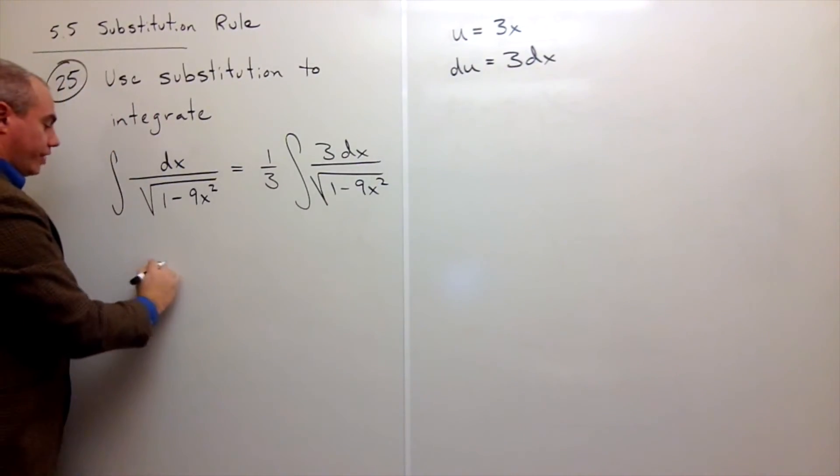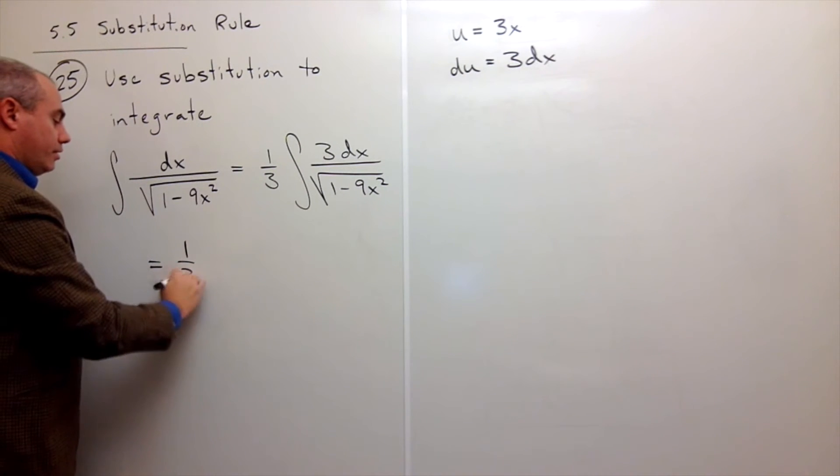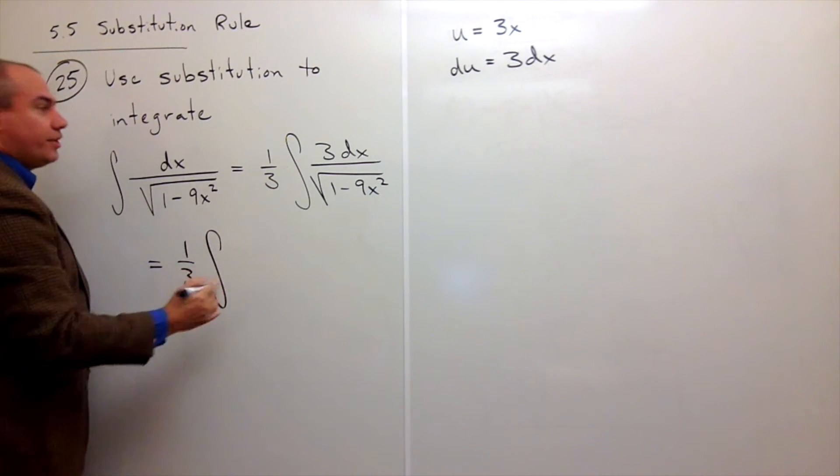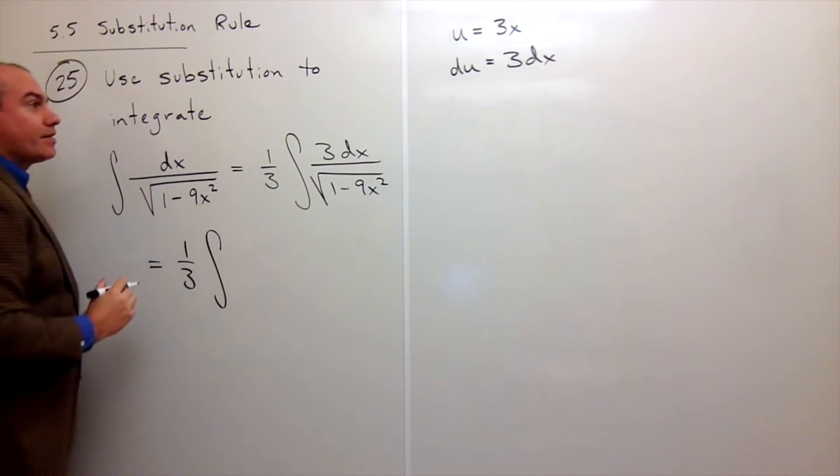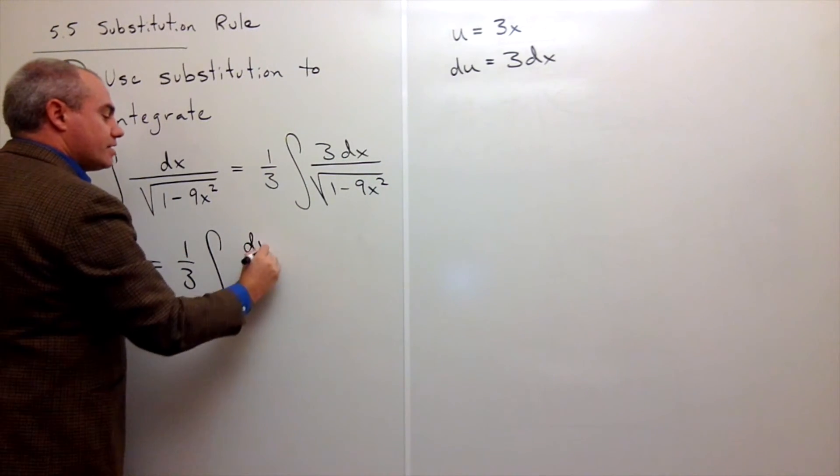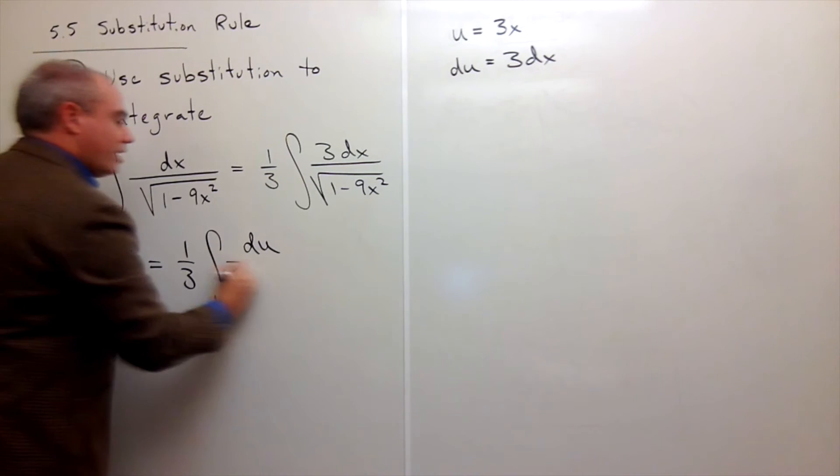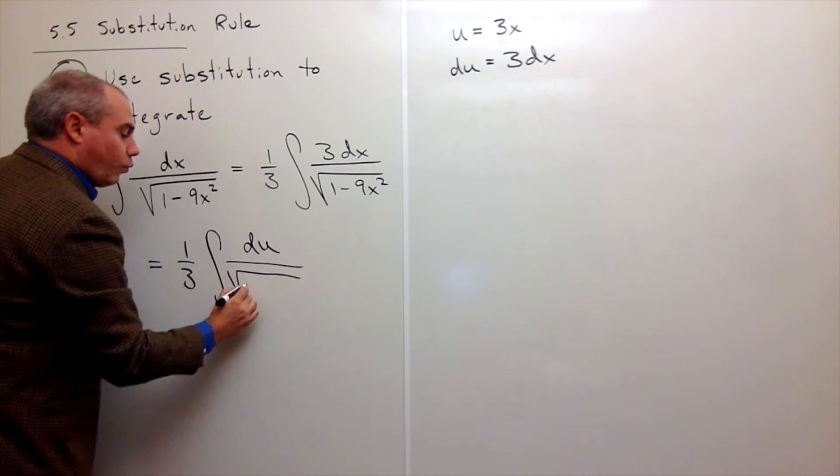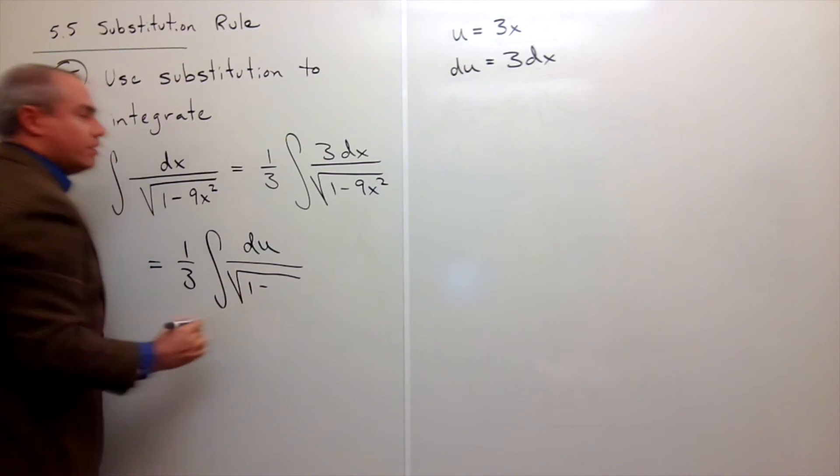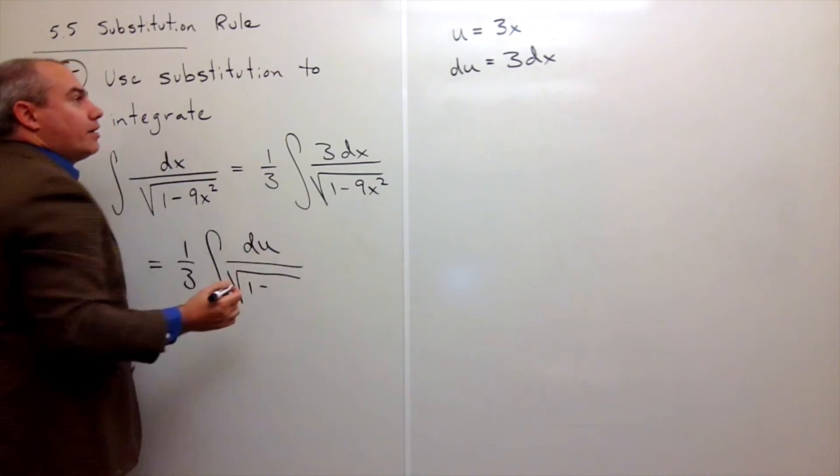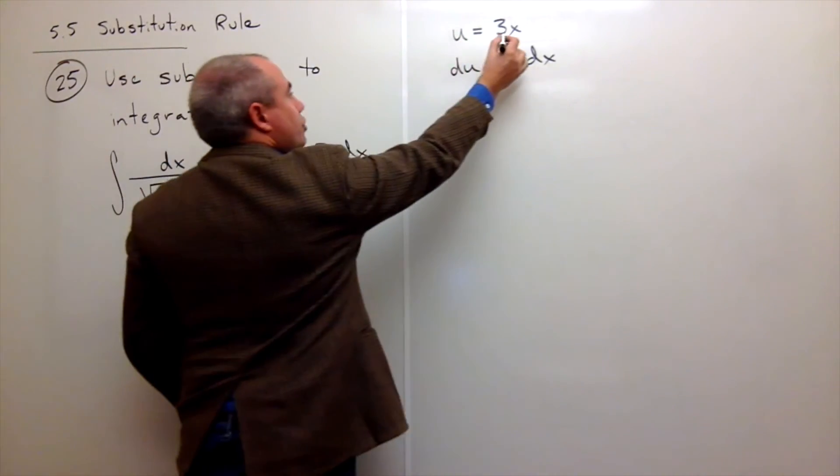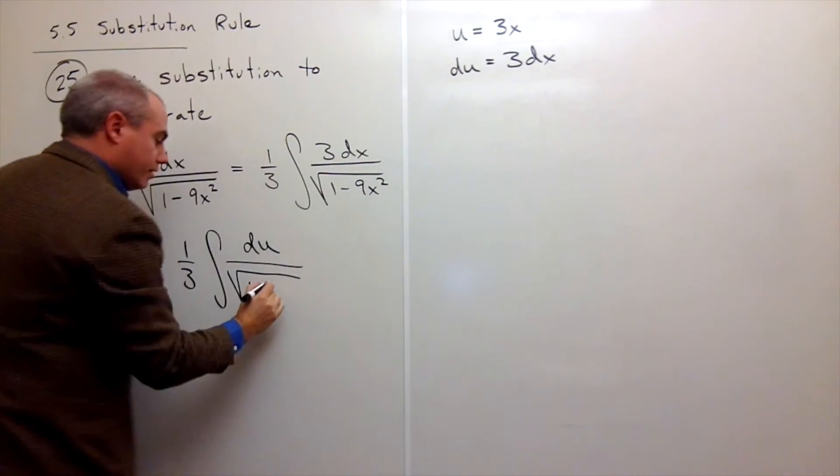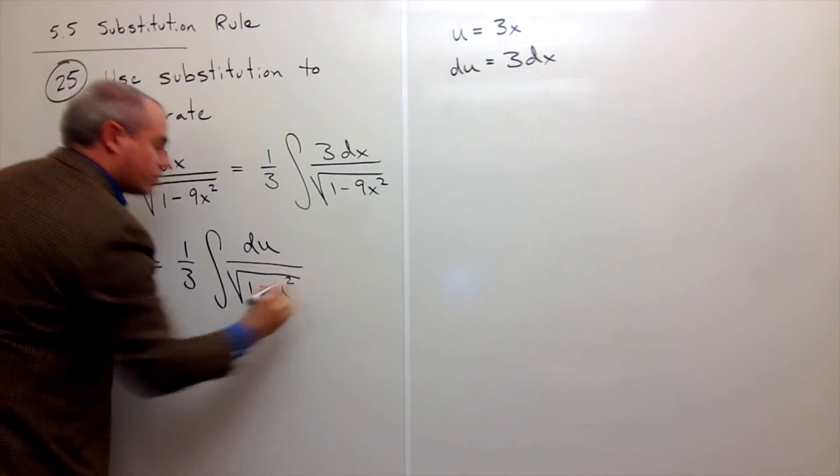I can rewrite this as one-third the integral. The top is 3 dx, but we know that that is the same as du. And on the bottom, I have a square root of 1 minus 9x squared. But 9x squared is just u squared.